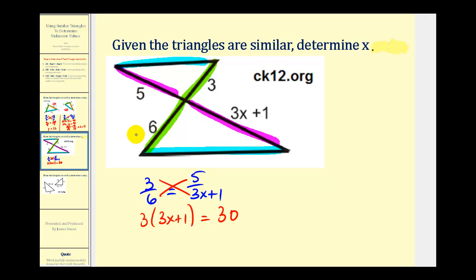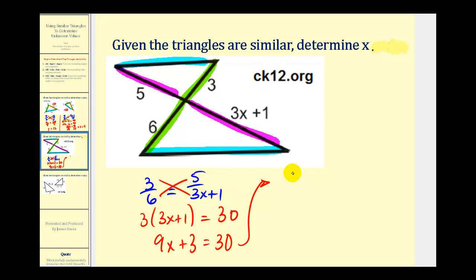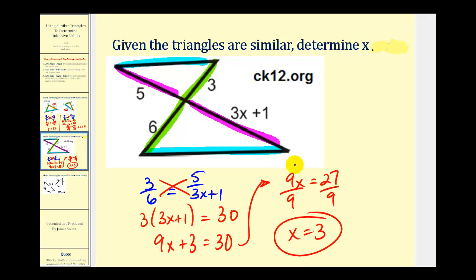Let's distribute to get nine x plus three equals 30. Subtracting three from both sides gives us nine x equals 27. Dividing both sides by nine gives us x equals three, which means the length of the side would be three times three plus one, which is ten.